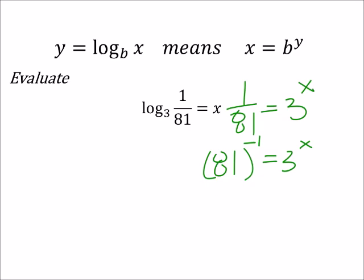81, as it turns out, is 3 to the power of 4. Now, this is to the power of negative 1, which equals 3 to the power of x.